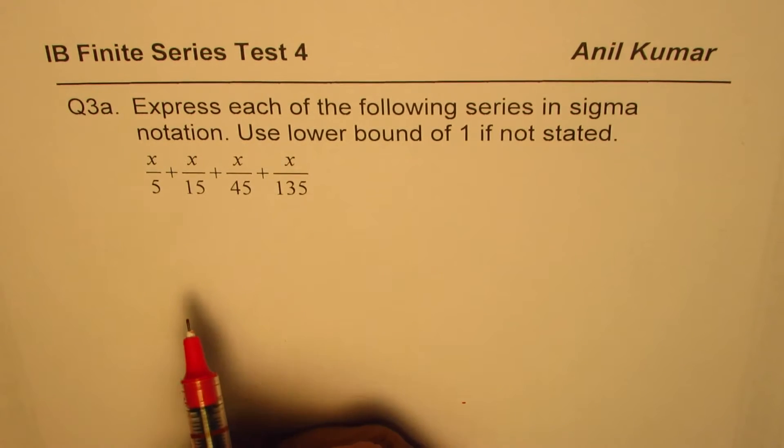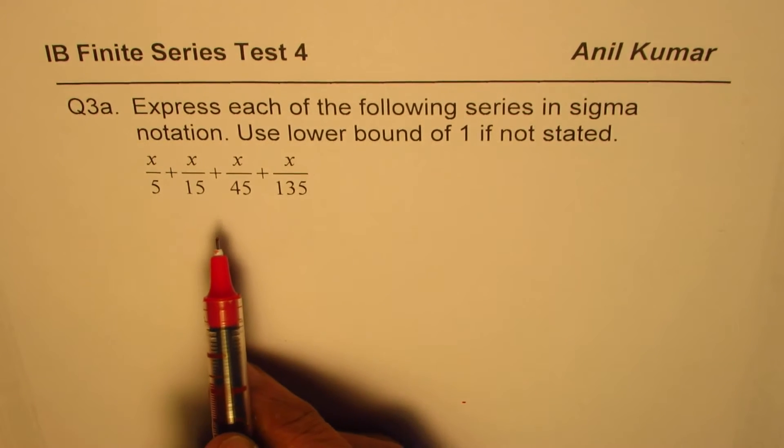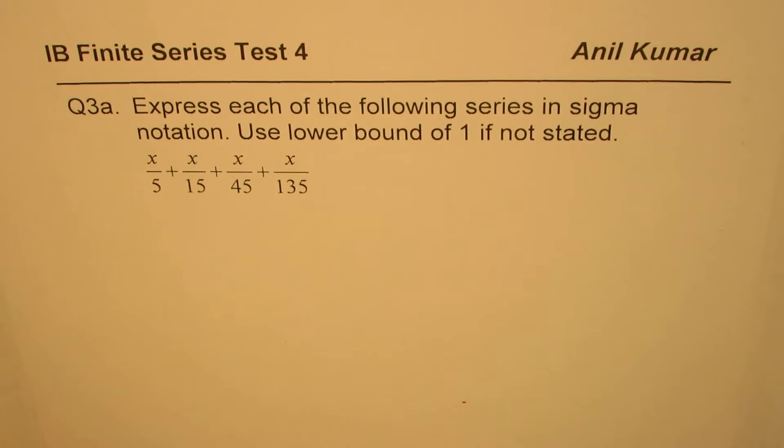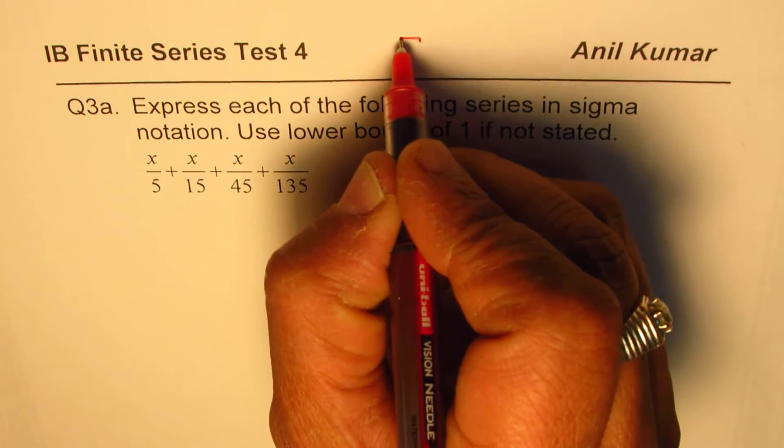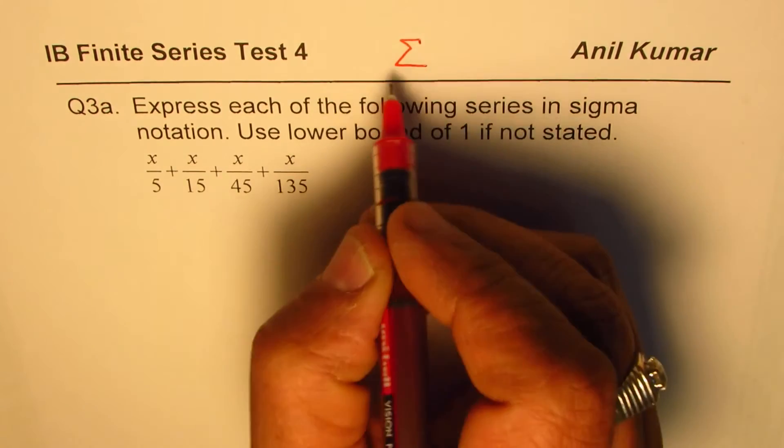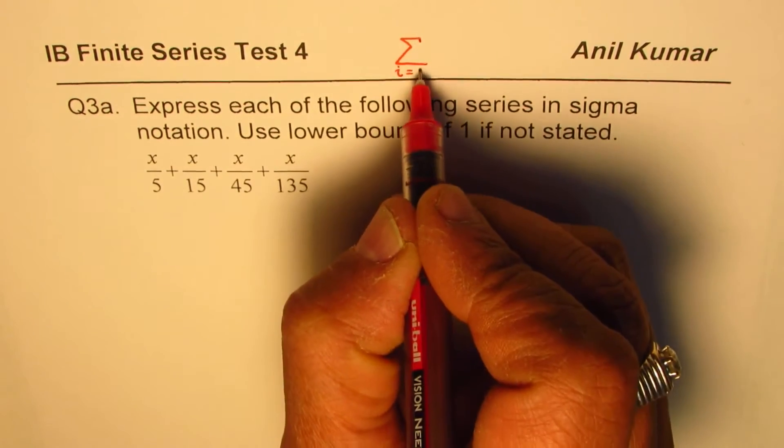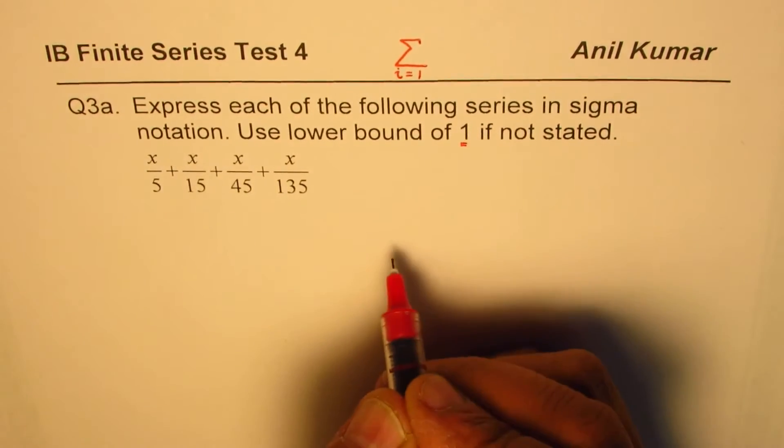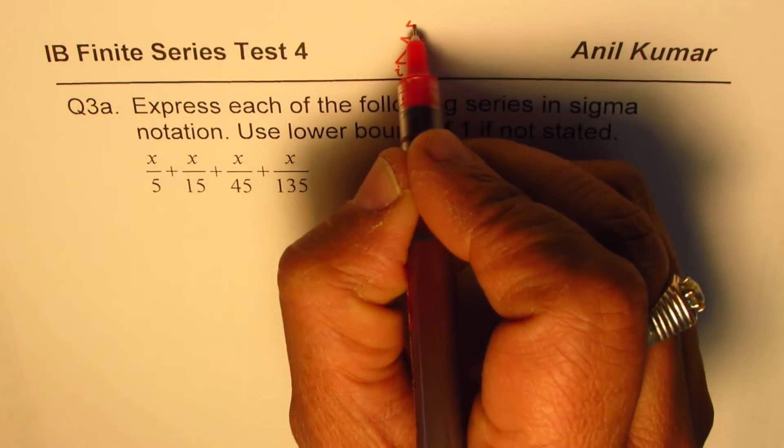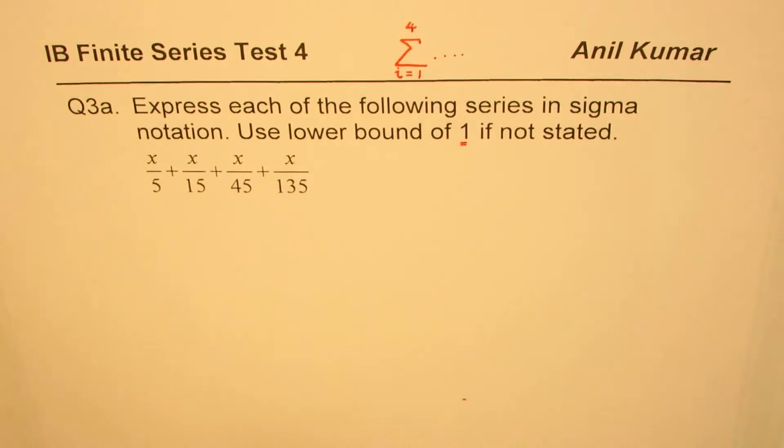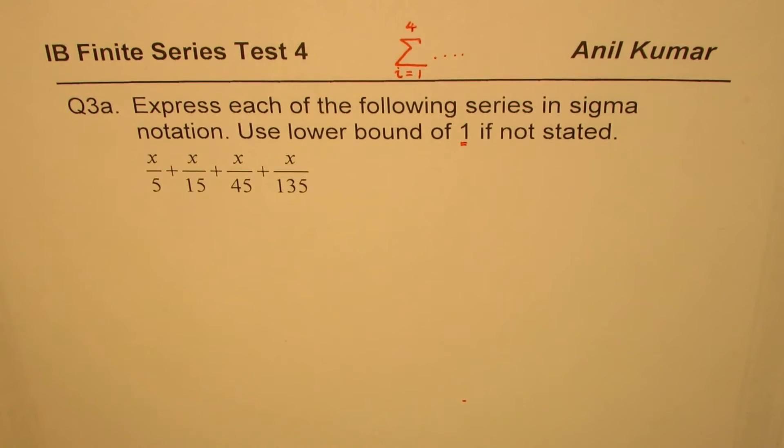So there are a couple of examples which I've taken. This is the first one from this question, so it is question number 1a. Sigma notation, I hope you remember, is kind of like this where i starts from 1. Since there are 4 terms, it will end at 4. So what should be there which will take care of all these 4 terms? That is what we need to figure out.